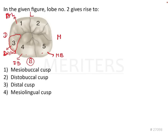And this one is the mesio-lingual cusp. The lobes giving rise to these cusps are named accordingly — so the mesio-lingual lobe gives rise to the mesio-lingual cusp. We were asked about lobe number two, which is the mesio-lingual lobe. So the answer to this question is the mesio-lingual cusp. You can go through the explanation given at the bottom of this video for information about other teeth and their lobes and cusps.